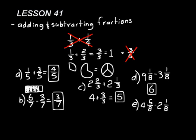Let's do one more subtraction problem: four and five-eighths minus two and one-eighth. We do the whole number part separately, so four minus two is two. Then five-eighths minus one-eighth is four-eighths, and we add that to the two. We always think of mixed numbers as the whole number part and the fraction part — always use that word 'and.' So our answer is two and four-eighths.